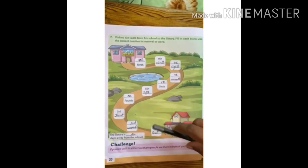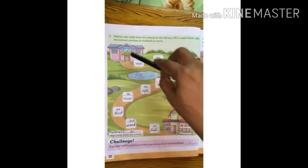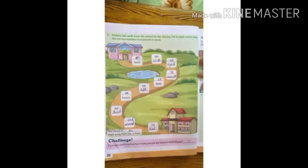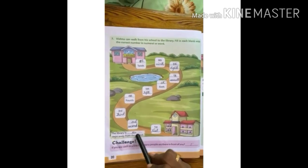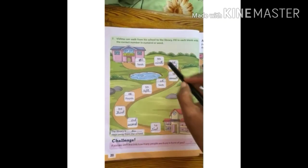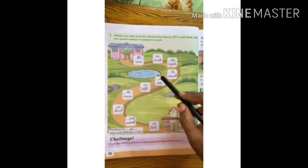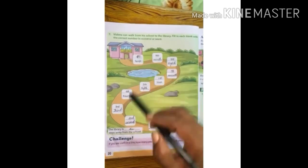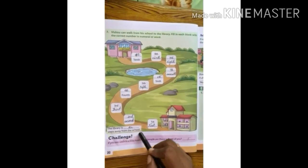He took 10 steps to reach the library from school. So the library is dash steps away from the school. How many steps are there? 1, 2, 3, 4, 5, 6, 7, 8, 9, 10. So the library is 10 steps away from the school.